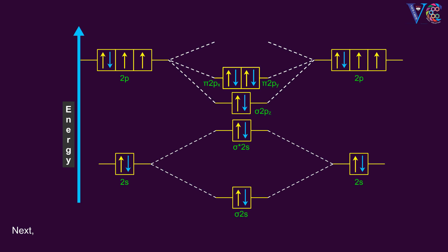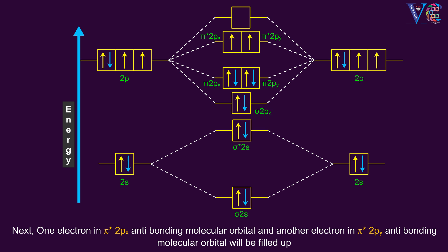Next, 1 electron in π*2px anti-bonding molecular orbital, and another electron in π*2py anti-bonding molecular orbital will be filled up.